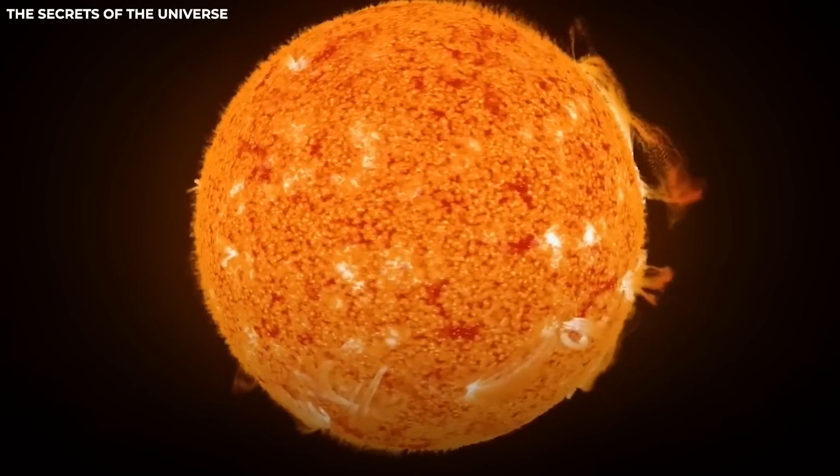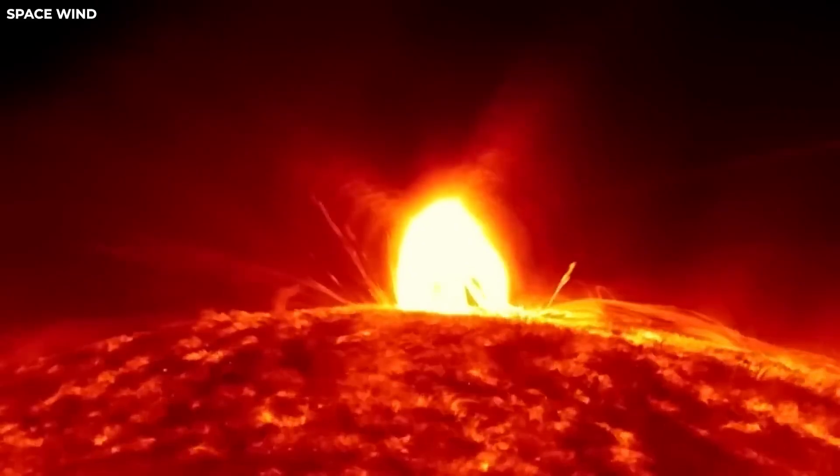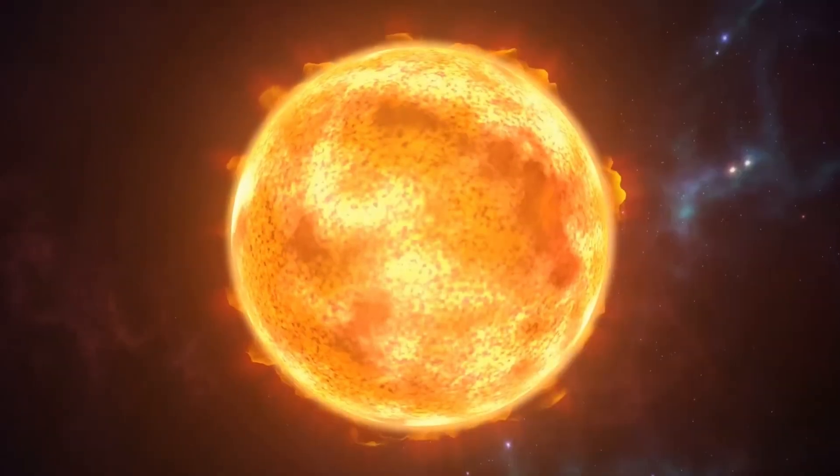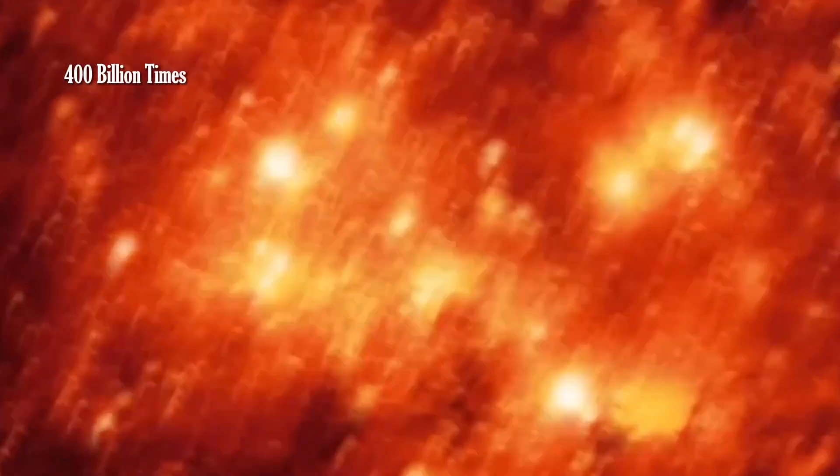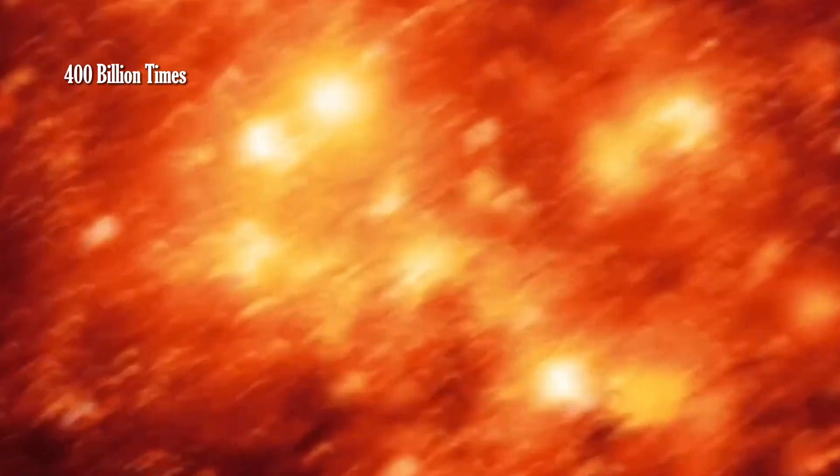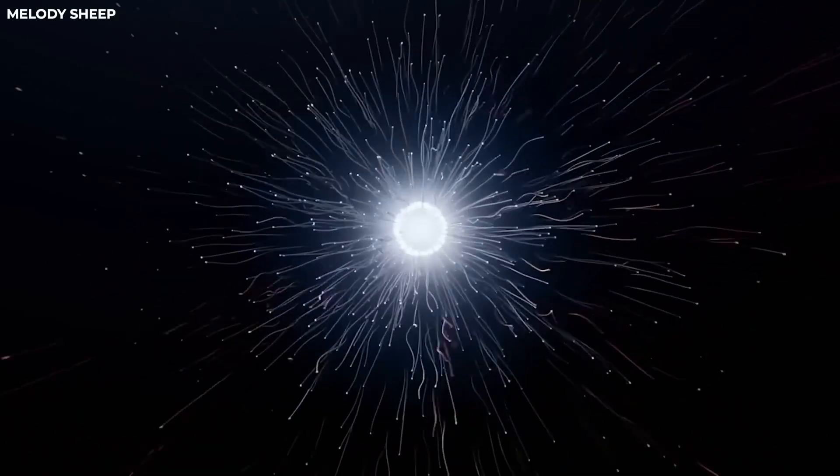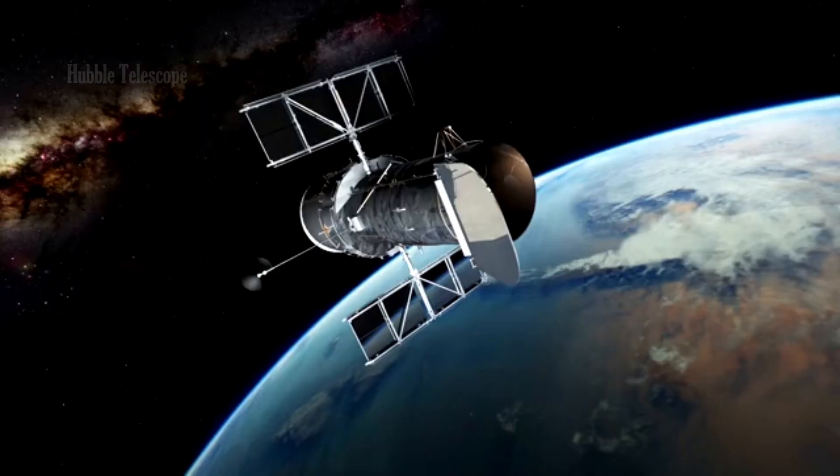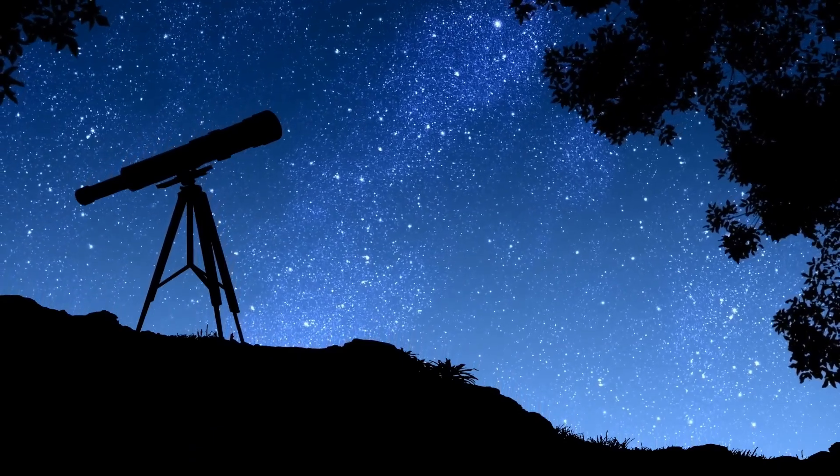So, picture this. Betelgeuse, once the cool, tenth-brightest star, decided it needed a cosmic makeover. This red supergiant, living large in its late stages of life, recently pulled off something unheard of. A surface mass ejection, SME, that spat out a mass 400 billion times greater than your typical star party trick. That's like launching multiple moons into space at breakneck speeds. And guess what? This colossal event allowed scientists to peek into Betelgeuse's aging process, thanks to the trusty Hubble telescope. It's like the star opened up its diary, and we got to read it in real time.